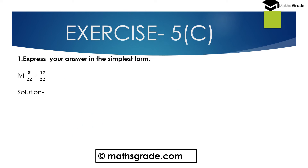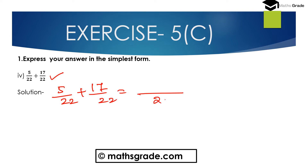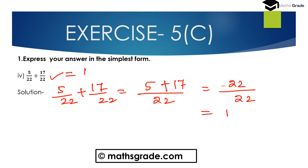Now question number 4: 5 divided by 22 plus 17 divided by 22. Both are like fractions because both have equal denominator, that is 22. When we add two like fractions, just add the numerators divided by the common denominator. Add the numerators 5 and 17: 5 plus 17 is 22, and 22 divided by 22 is 1. So 5 divided by 22 plus 17 divided by 22 equals 1, which is in the simplest form.